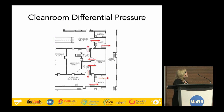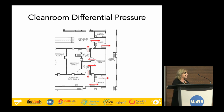Differential pressure is also controlled. The air pressure in the processing room is greater than in the airlocks beside it, so that when you open the door leading into the clean room you are not dragging dirtier air in with you — the air is pushed out of the clean room when you open the door, and so on through the airlocks until you reach the corridor.